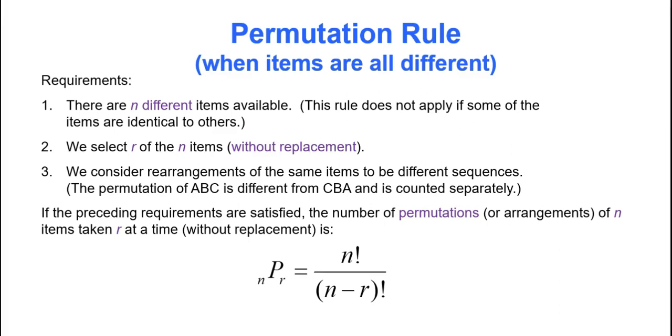But wait, there's more. There's the permutation rule. Suppose you only wanted to take some of some items and you want to arrange them in a specific order. For instance, maybe you have 10 contestants in a competition and you want to pick first prize, second prize, third prize. How many ways are there to do that? That's where the permutation comes in. So first off, all items have to be different. There have to be N different items available. Can't have anything identical to each other. You select some, or R of the N items, without replacement.